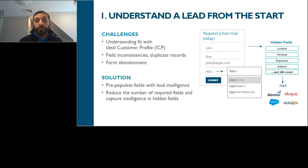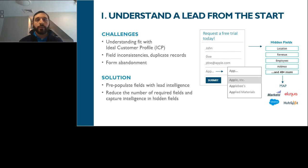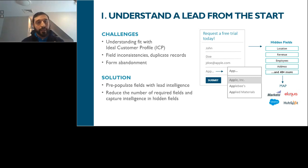There are common challenges at the point of conversion on a form itself. Challenges include understanding the fit with your ideal customer profile based on the information you're requesting, receiving inconsistent or inaccurate lead information which hurts scoring and routing, and not even capturing the lead due to form abandonment. All the people visiting these form pages but not filling them out — that's a signal in itself. Typical lead form conversion rates for B2B can range from 2 to 10 percent depending on your industry. A solution is to use a form augmentation tool that can unmask audiences and enhance lead records with new intelligence.